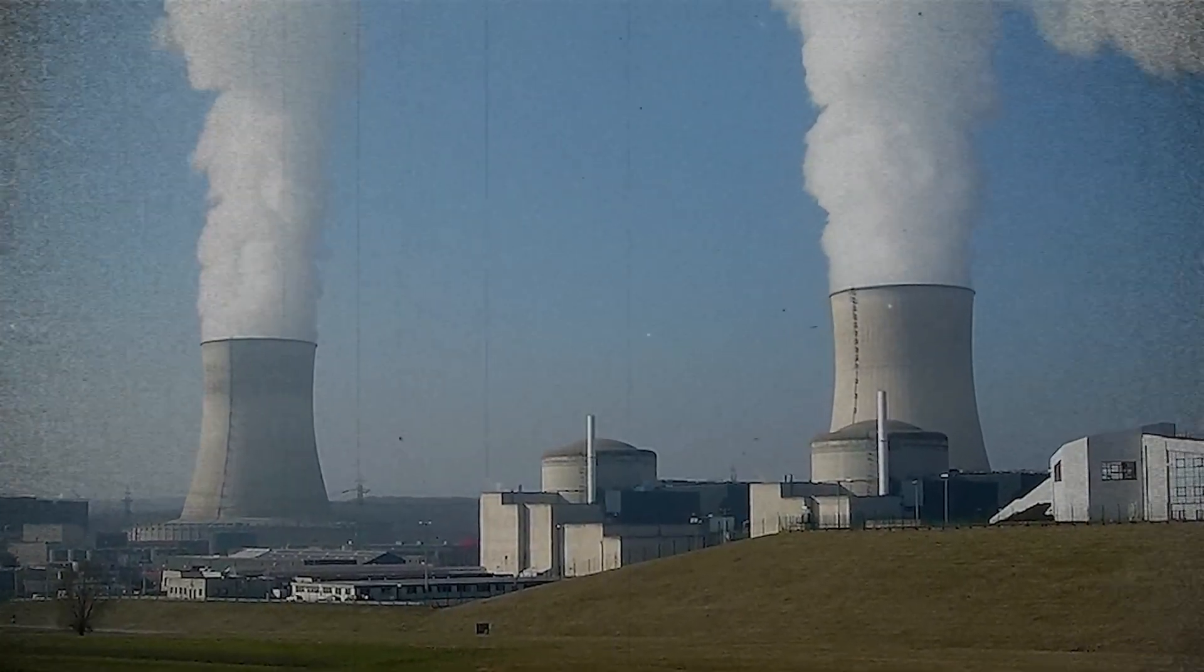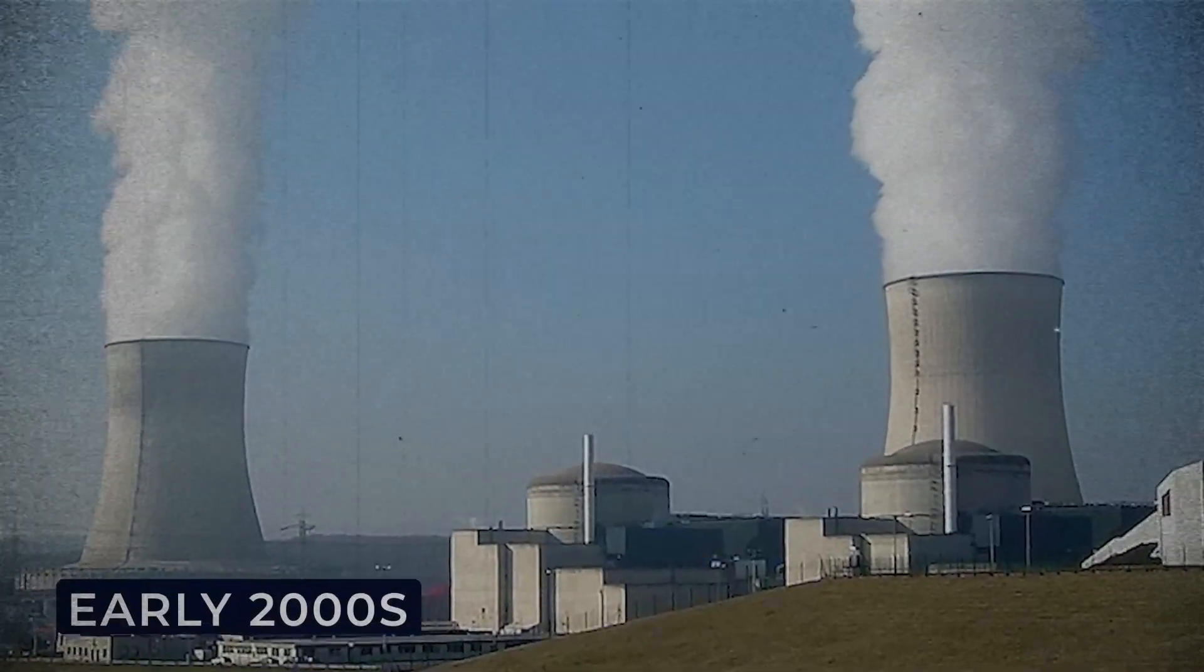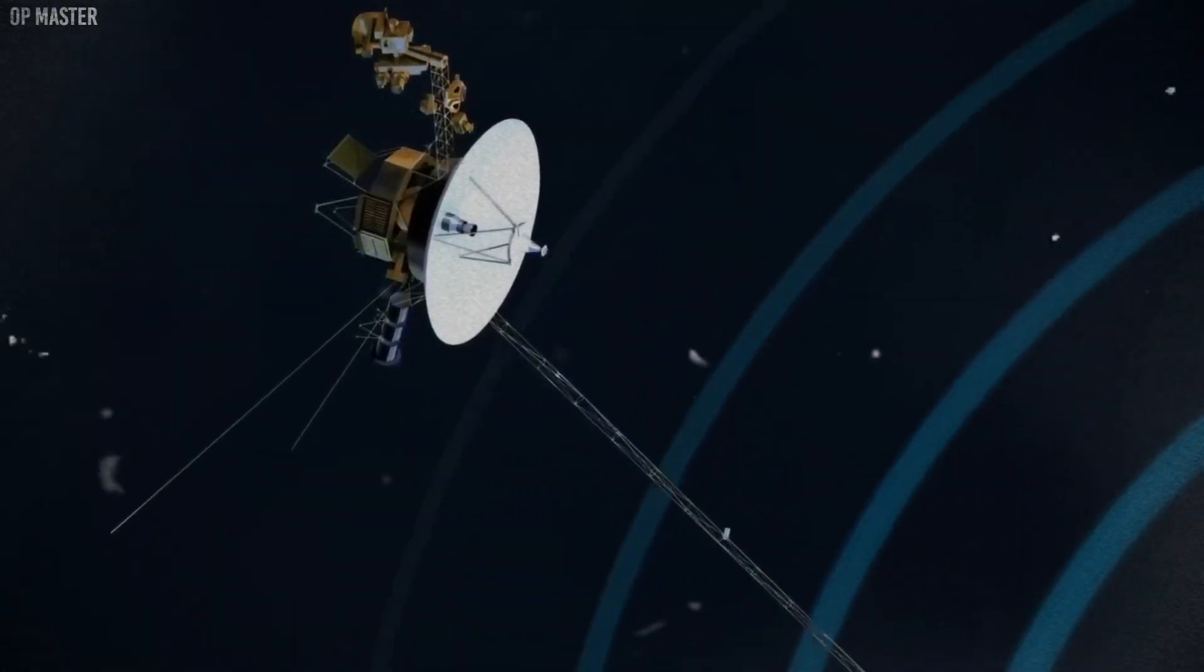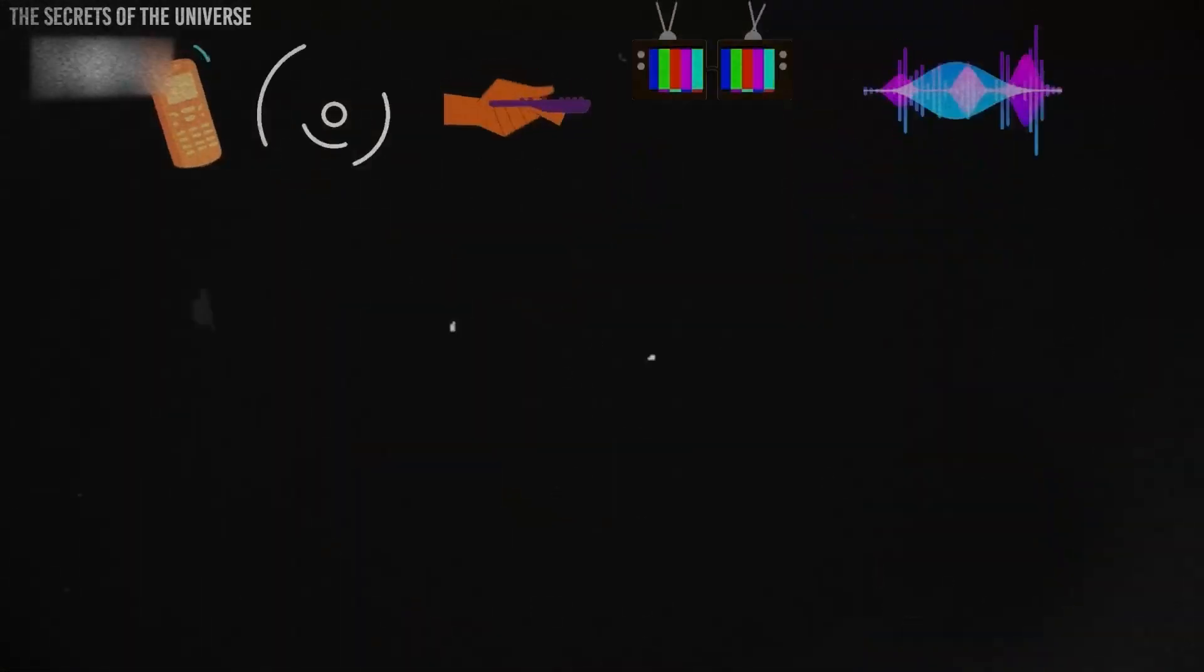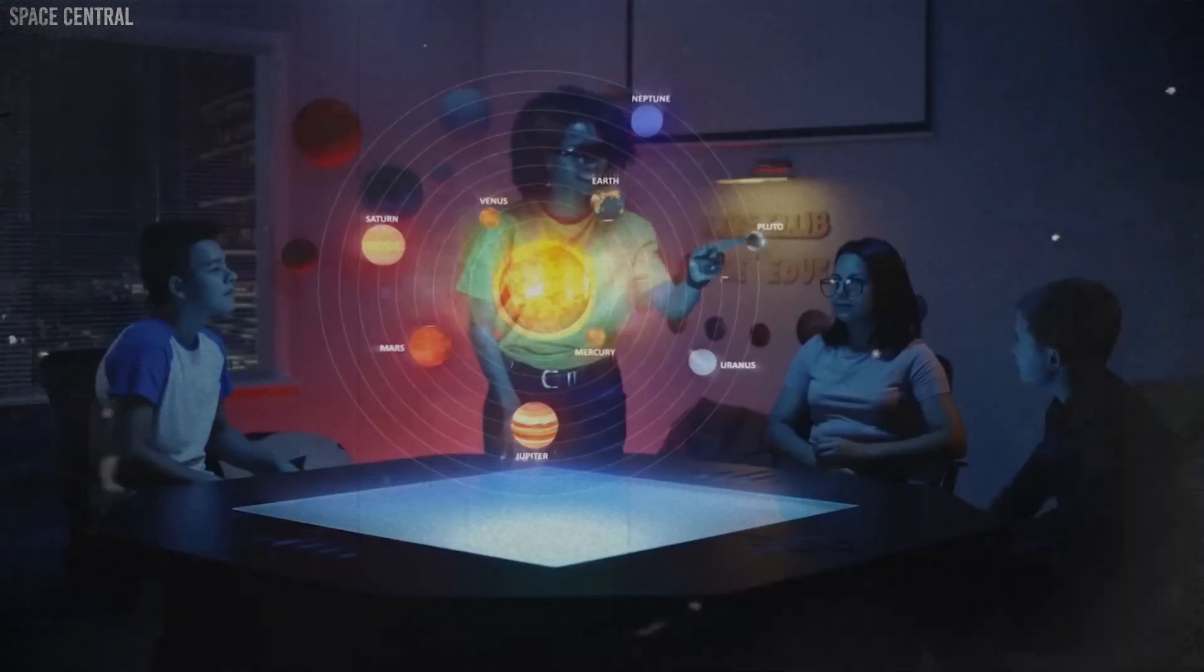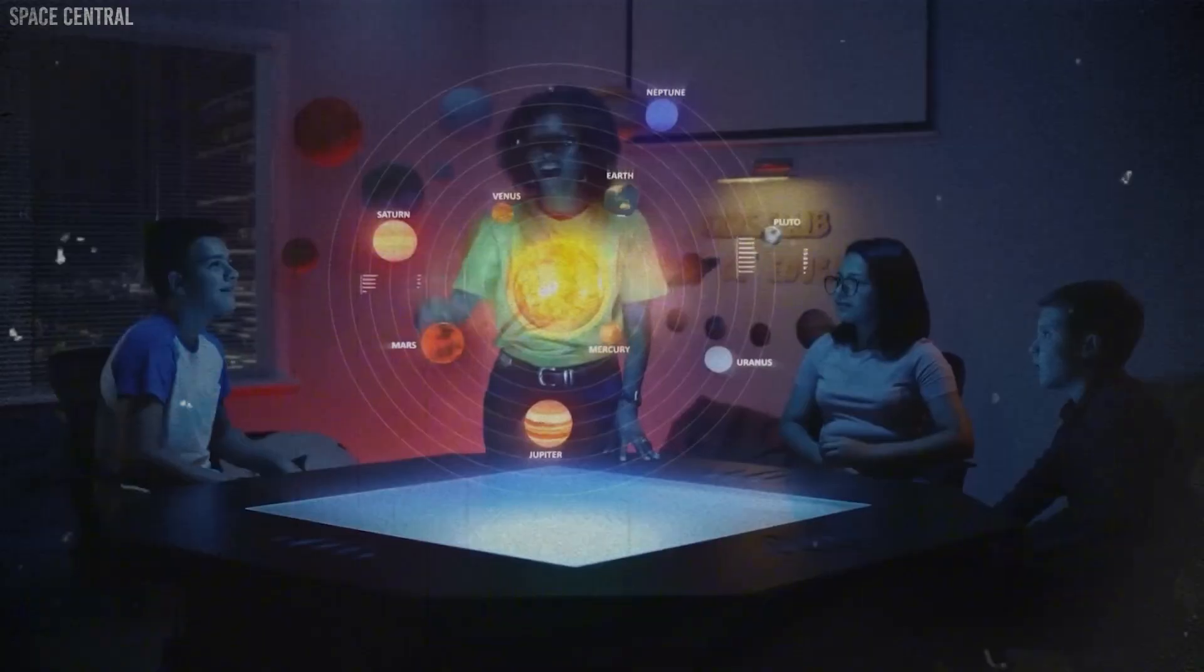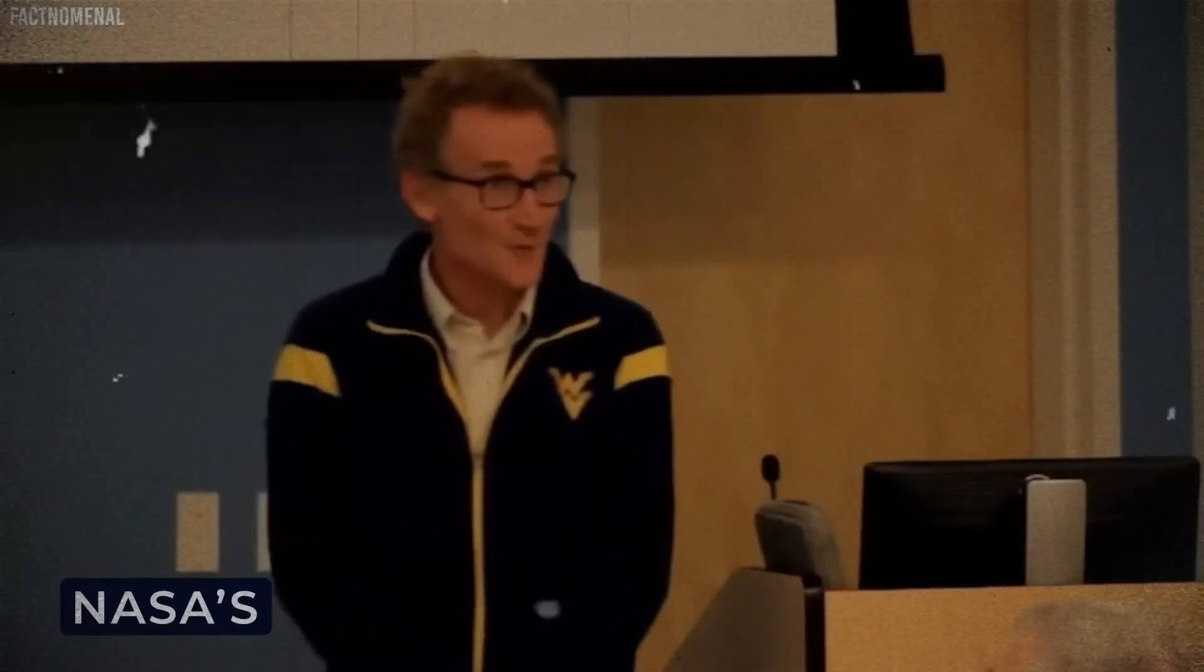After completing their planetary missions, both Voyagers continued, moving farther away from Earth. Although Voyager 2 launched first, Voyager 1 is now farther from Earth because it is traveling faster. Voyager 1 is moving at about 10.6 miles per second, while Voyager 2 is traveling at about 9.7 miles per second.